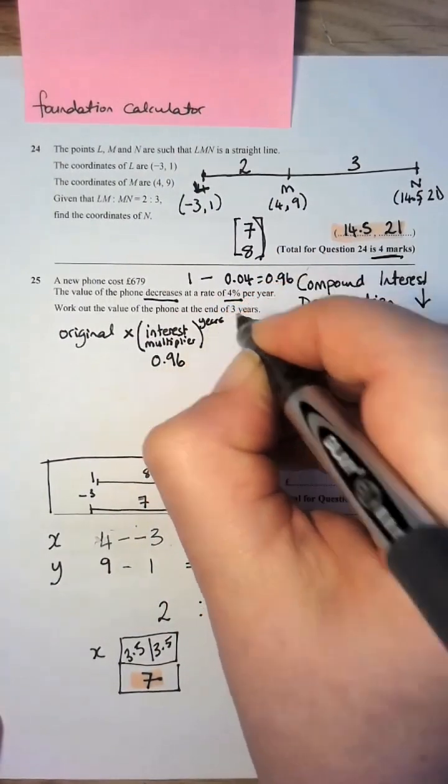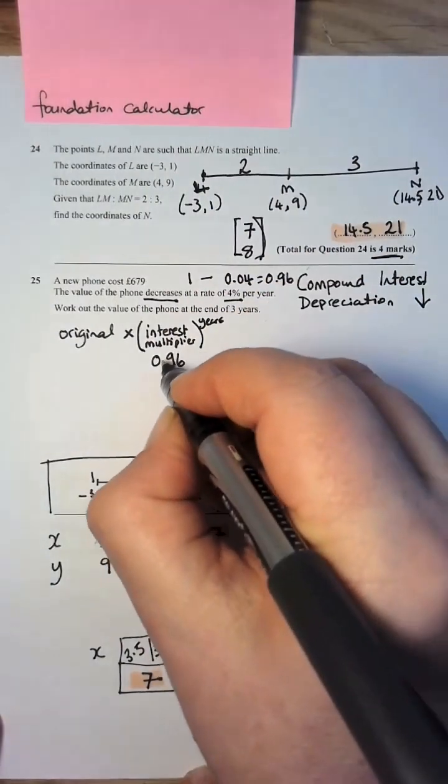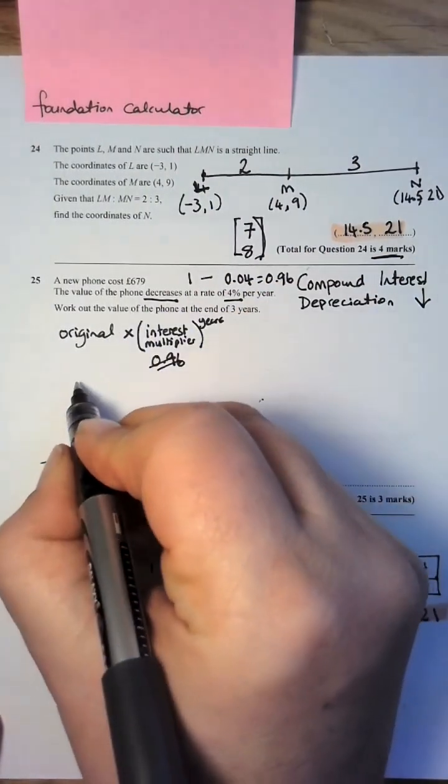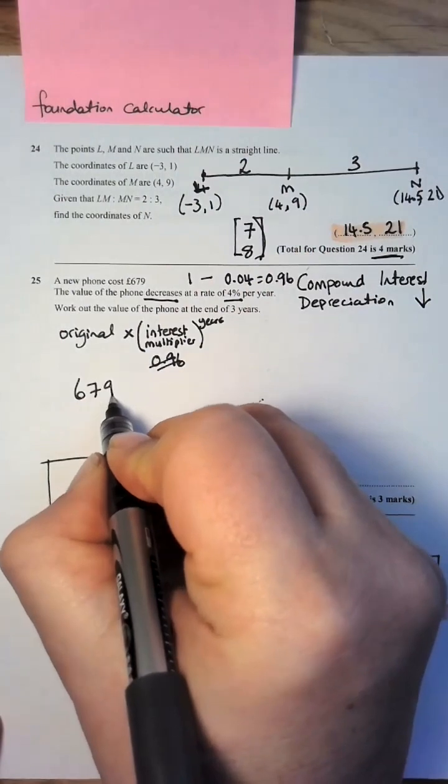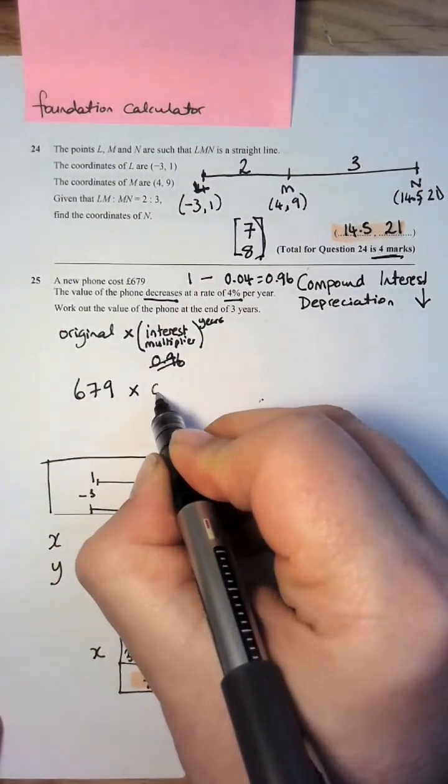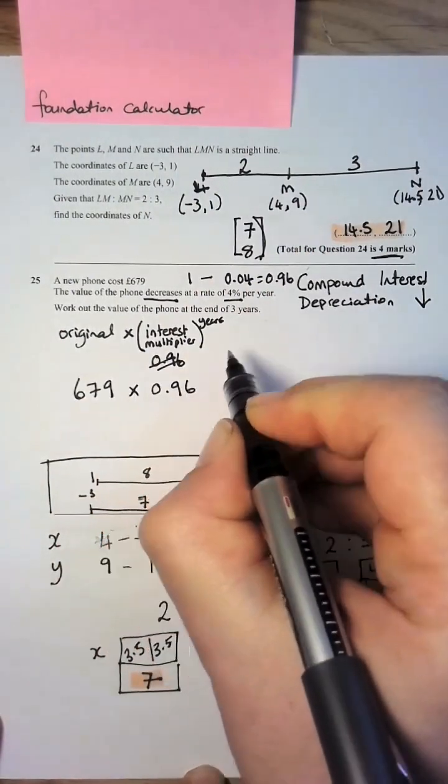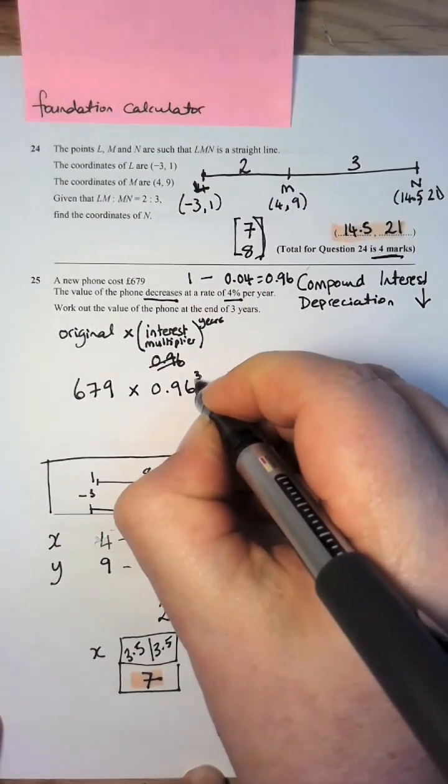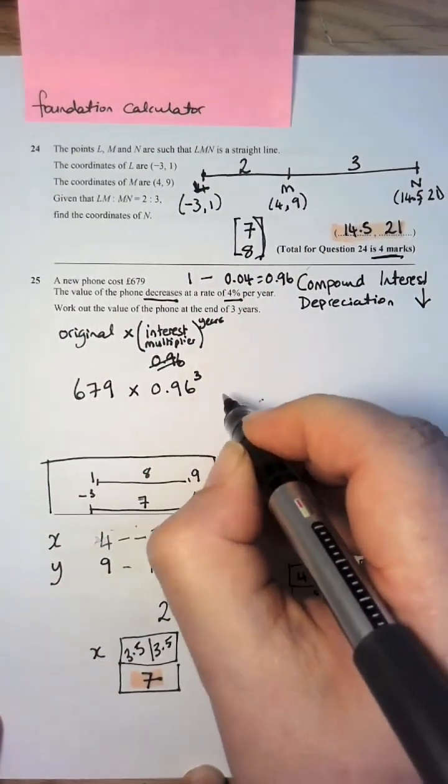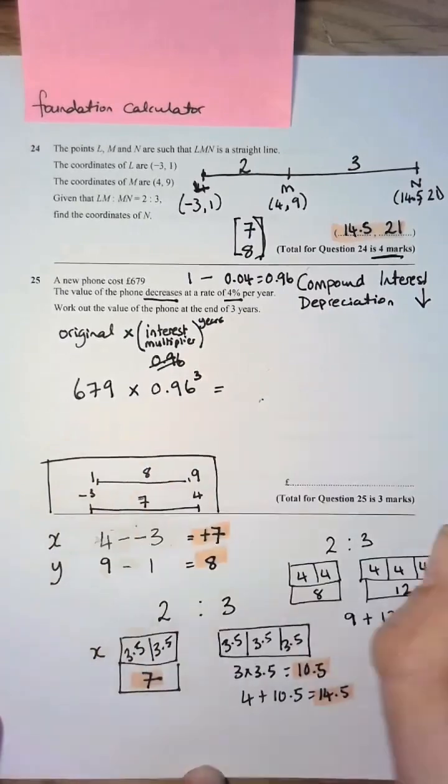And then we need to put this to the power of this number here, so I should move this down a bit. It's the original amount, we're going to multiply it by 0.96, and then we're going to cube it, because that's the number of years. I'm literally going to put that into my calculator.